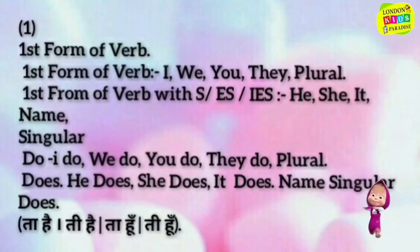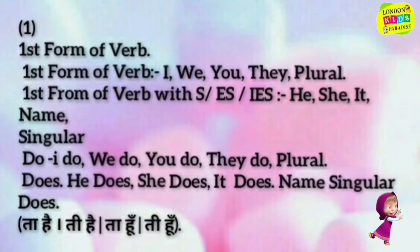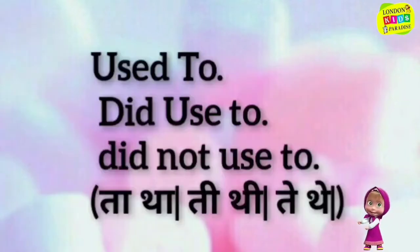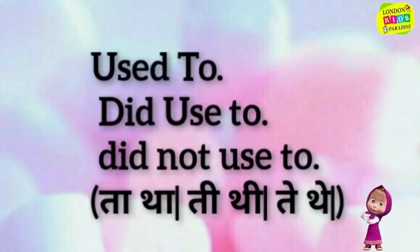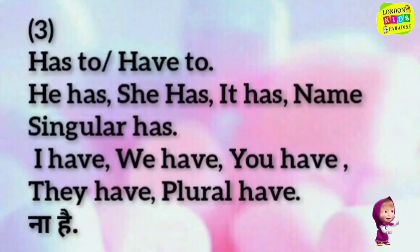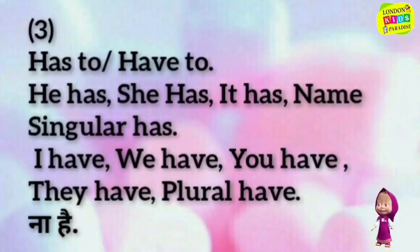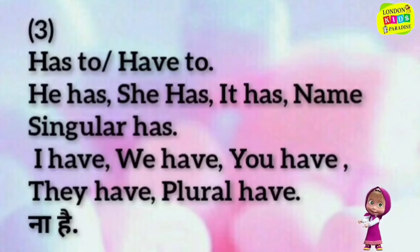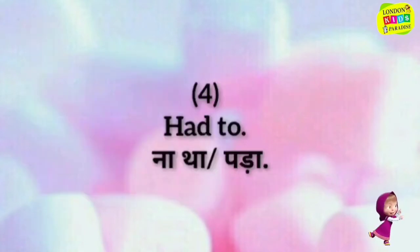Does — ta hai, ti hai, ta hoon, ti hoon. Used to / did — ta tha, ti thi, teth hai. Have to / has to: he has, she has, it has, name (singular) has. I have, we have, you have, they have (plural) — na hai, that to na tha pada.